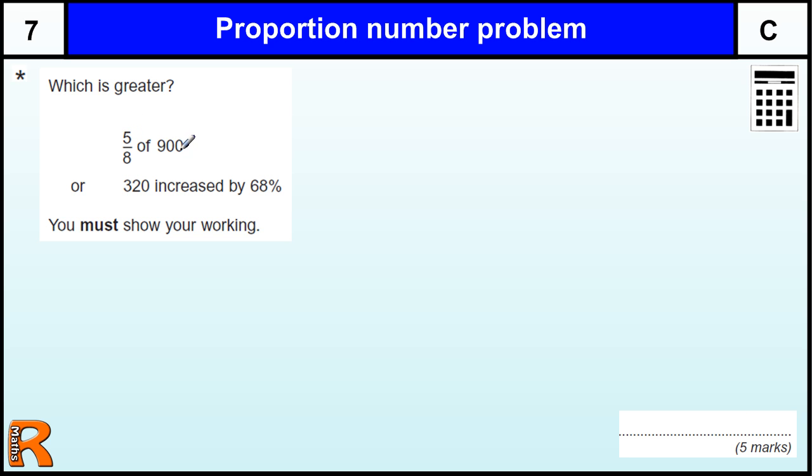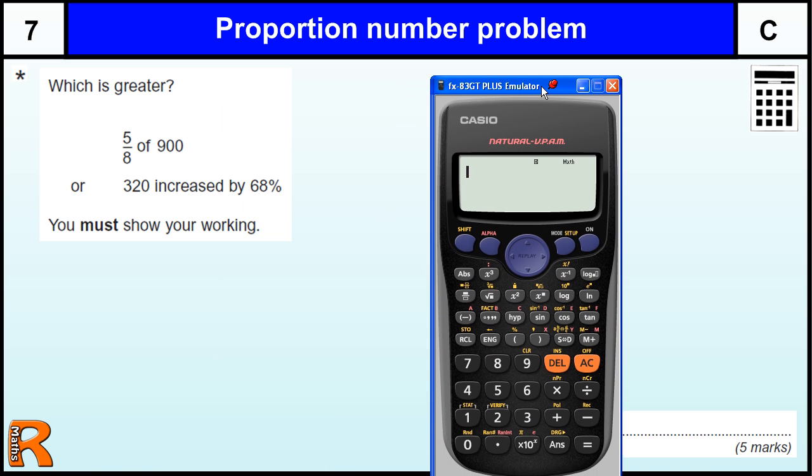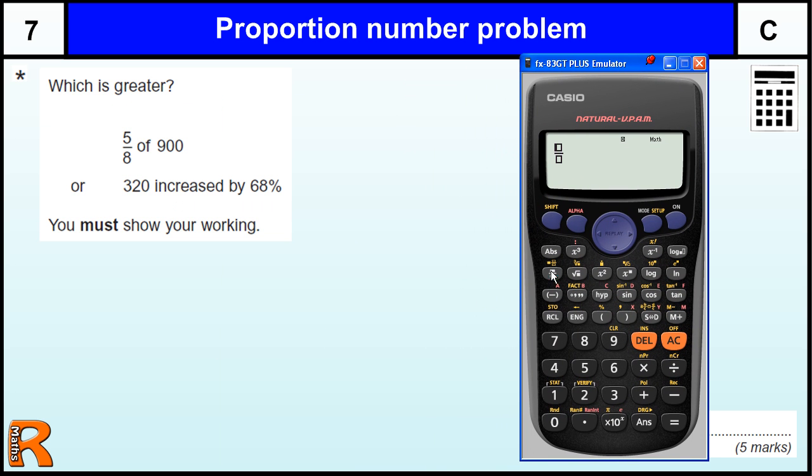So five-eighths of 900. This is a calculator question, which sort of makes it a little bit trivial. You can just type in five-eighths, you can't type of, but of means times, make sure it's outside the fraction, of 900, and you'll get, if you just write that down, five-eighths times 900, 562.5.